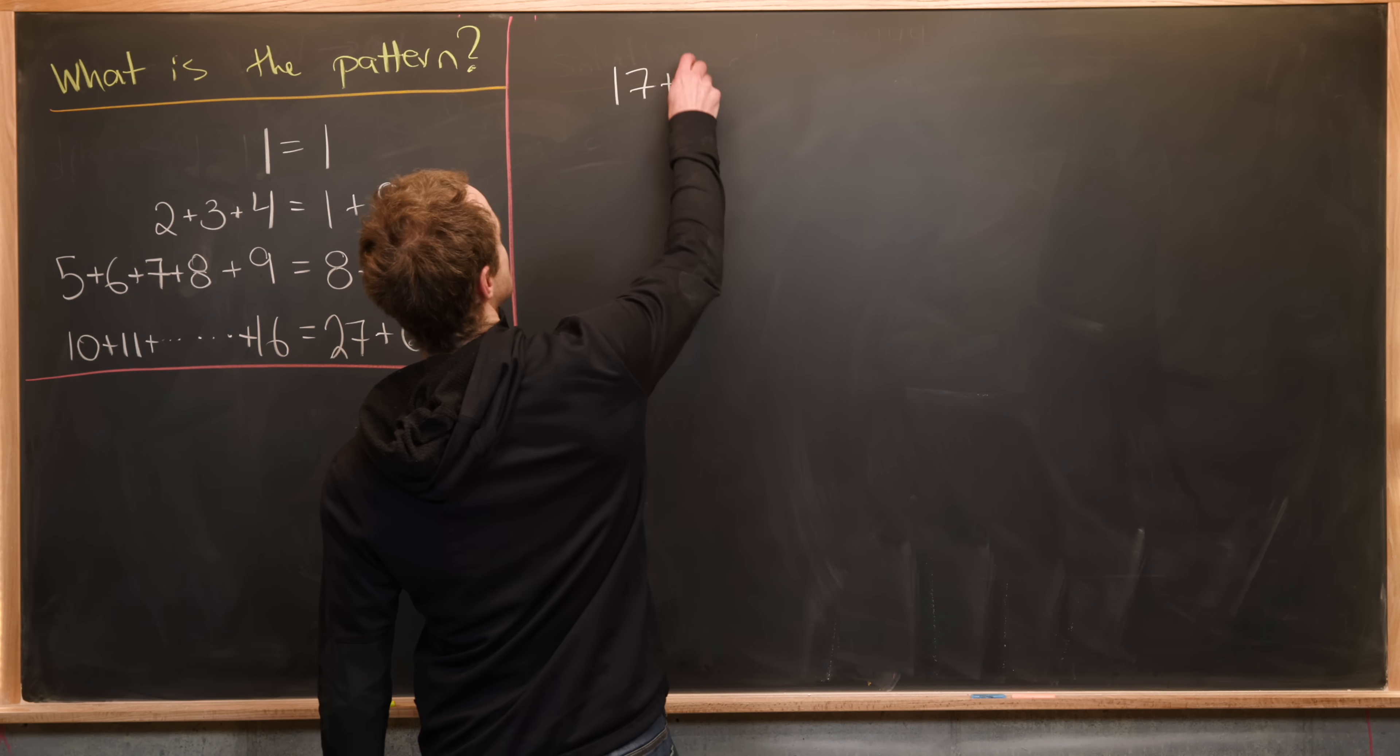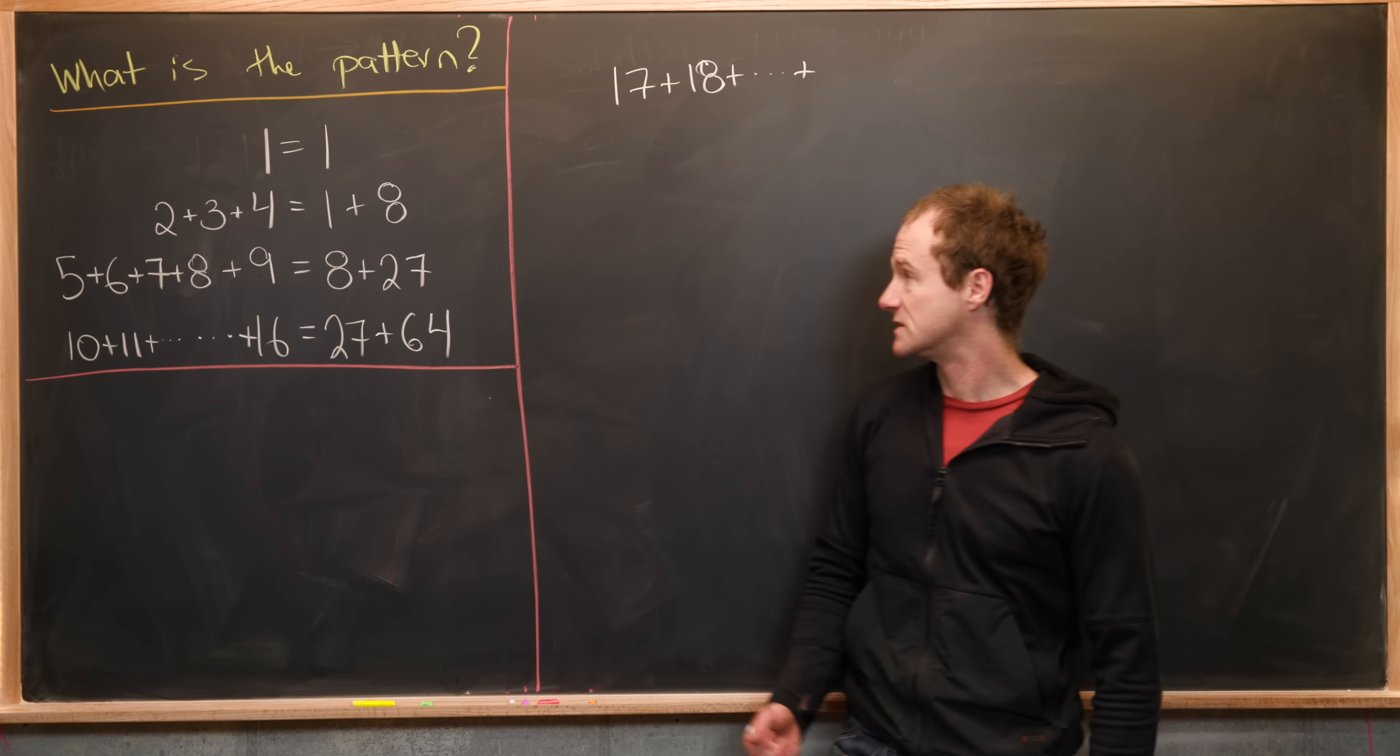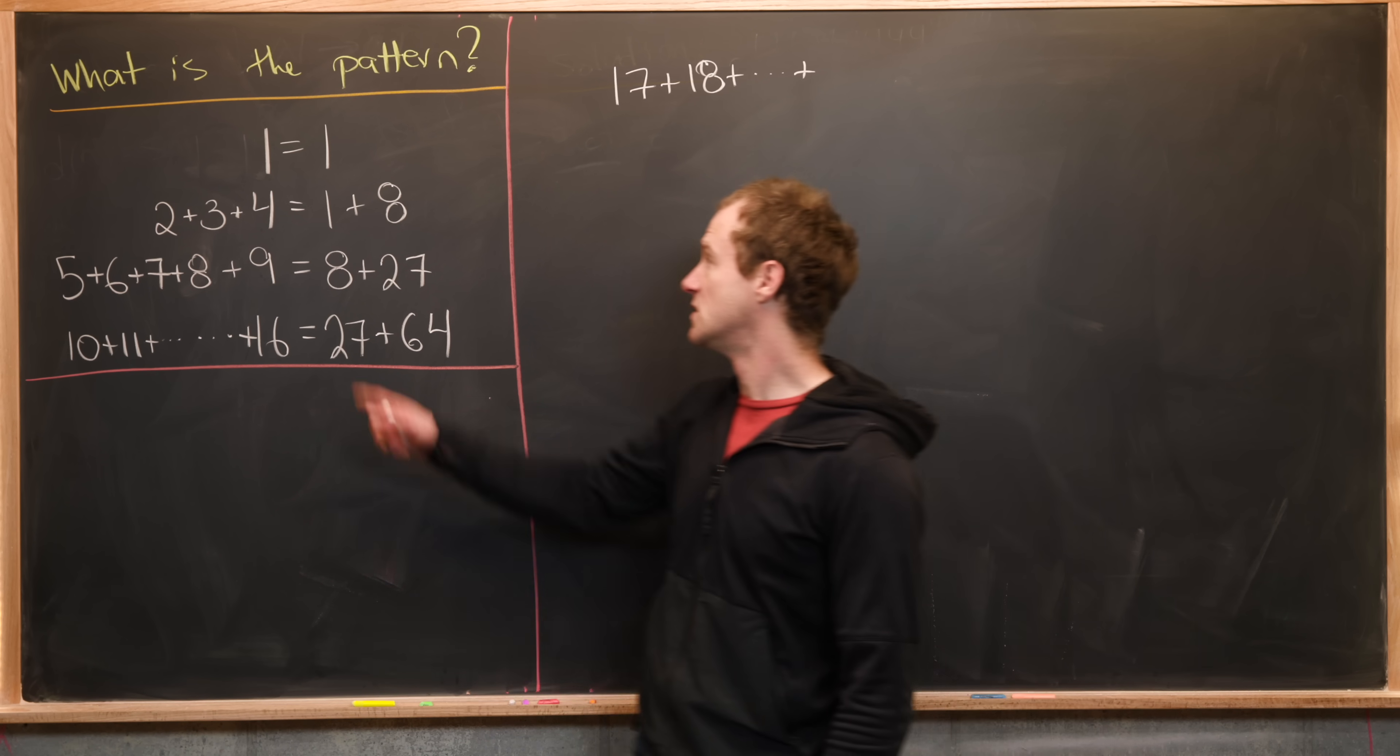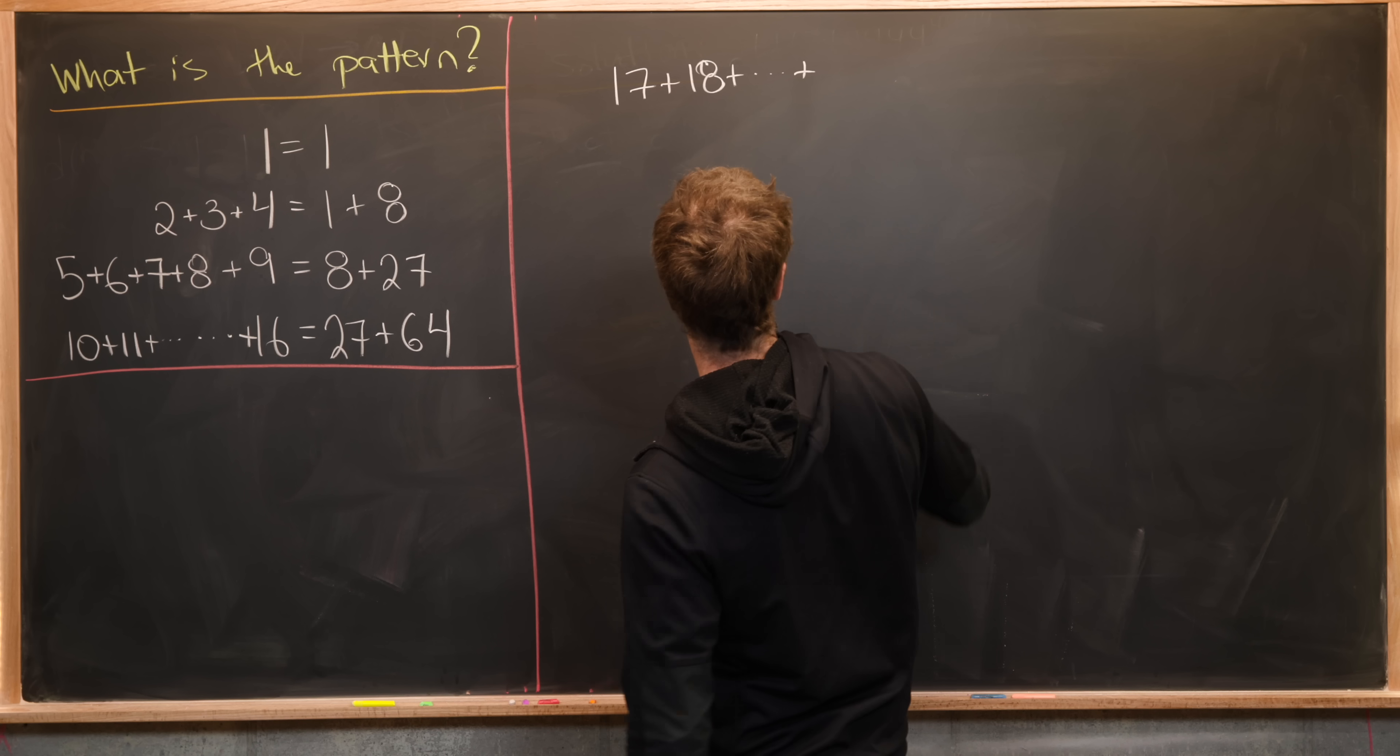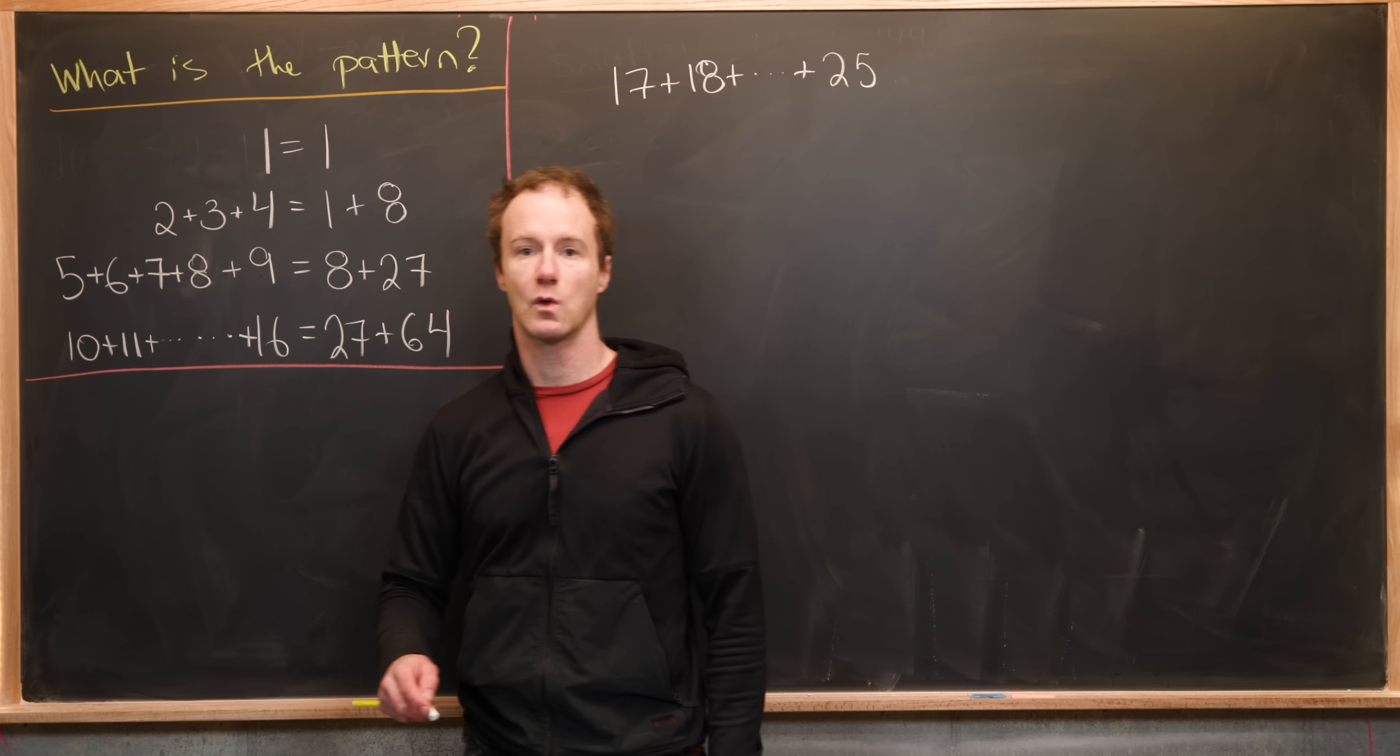So let's write that down. We have 17 plus 18 plus, then let's see where it ends. Notice that these guys are ending at perfect squares. So we have 1 squared, 2 squared, 3 squared, 4 squared. So it stands to reason that this should end at 5 squared or 25.